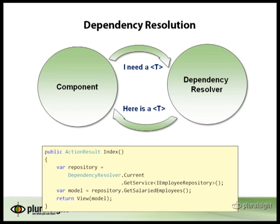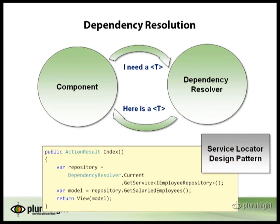This code is an example of something using the service locator design pattern. That is, the dependency resolver — we can call it a service locator. It knows where to locate services. We can walk up and ask it for a service, and it will find it and return it to us.